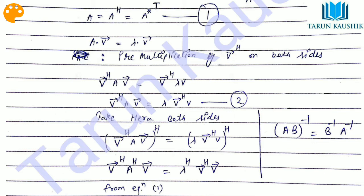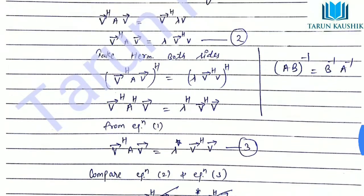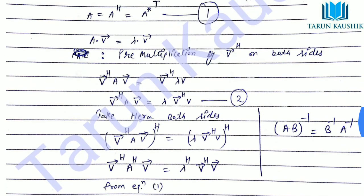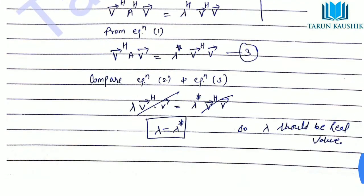Lambda is a constant so taking its Hermitian gives its conjugate lambda^*. The double-Hermitian on V cancels, leaving just V. So the Hermitian of Equation 1 gives: V^H · A^H · V = lambda^* · V^H · V. Now using the Hermitian matrix property A^H = A, we substitute A^H with A to get: V^H · A · V = lambda^* · V^H · V. Call this Equation 3.